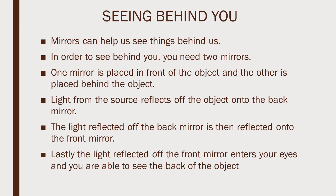Light from the source reflects off the object onto the back mirror. The object in this case would be the back of your head. The light reflected off the back mirror is then reflected onto the front mirror. What is being viewed at the back mirror will then be seen on the mirror in front. Lastly, the light reflected off the front mirror enters your eyes and you are able to see the back of the object. This is how you will be able to see the back of your head. Please try this at home.